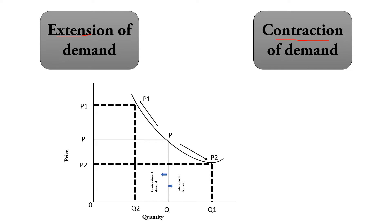Extension of demand occurs when the price decreases and the demand increases — we call it extension of demand. This is shown as a downward movement from left to right on the demand curve, meaning the demand for the product is increasing because of a decrease in the price of the product.